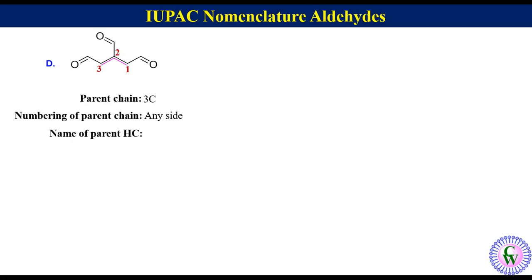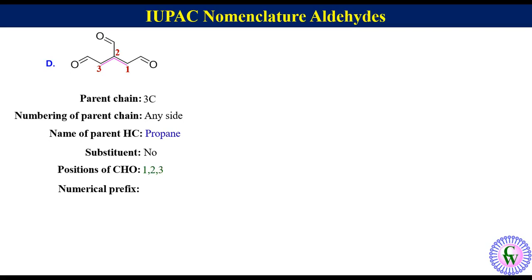Name of parent chain: it is propane. Substituent: there is no substituent. Position of CHO: since the CHO groups are attached to C1, C2, and C3 of the parent chain, it will be 1,2,3. Numerical prefix: it is 'tri' since there are 3 CHO groups.